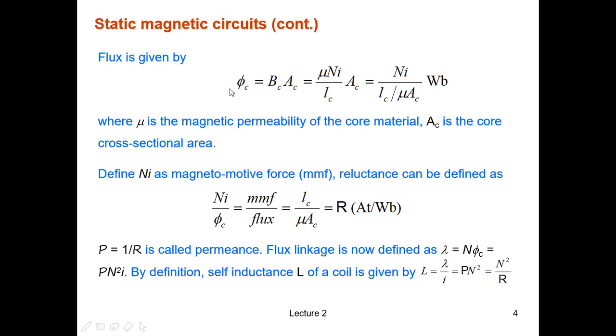Flux in the core φc equals Ni divided by Lc divided by μAc, and the unit is Weber. In this formula, μ is the magnetic permeability of the core material, and Ac is the core cross-sectional area.